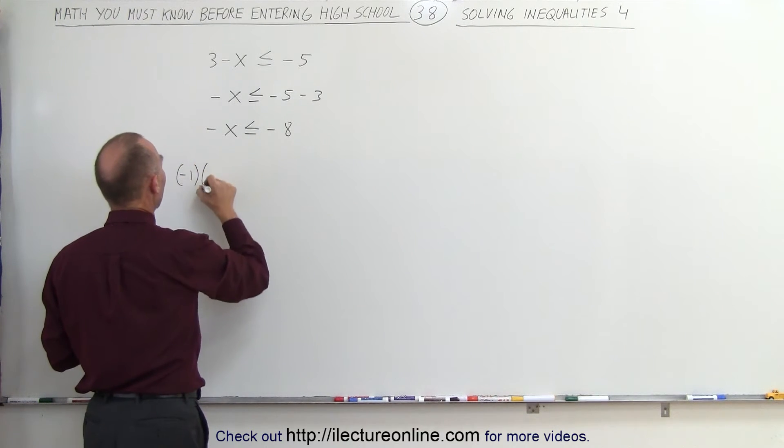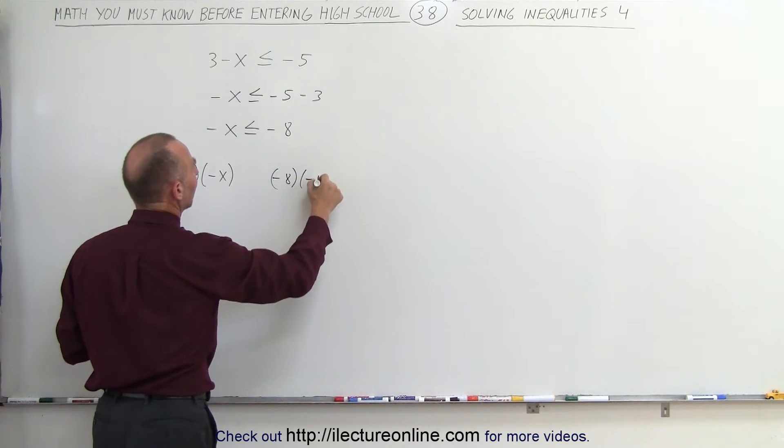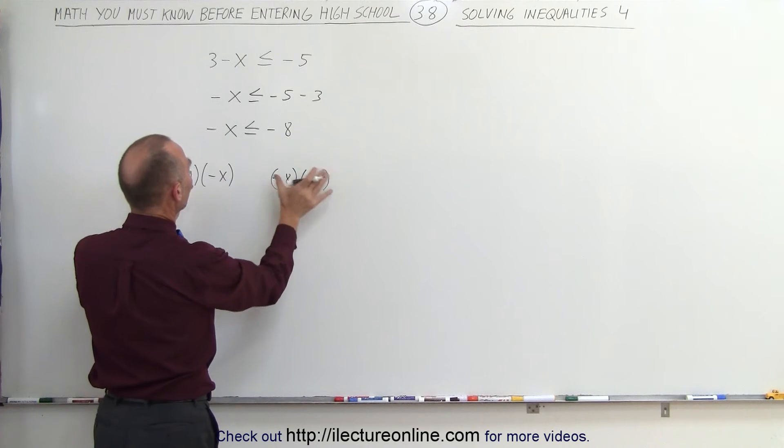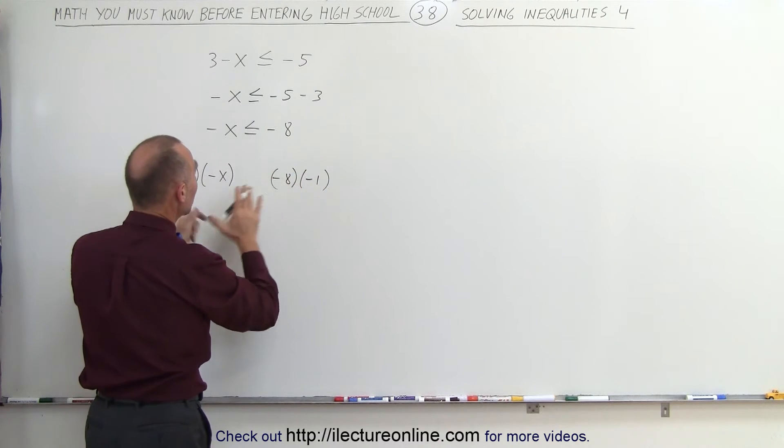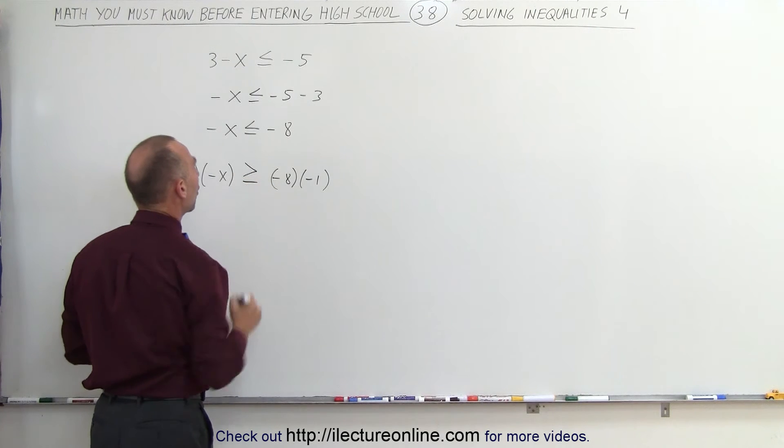So negative 1 times negative x and negative 8 times negative 1. We multiply both sides of the inequality by negative 1. But when we do that, we must flip the inequality symbol. So now it becomes greater than or equal to.